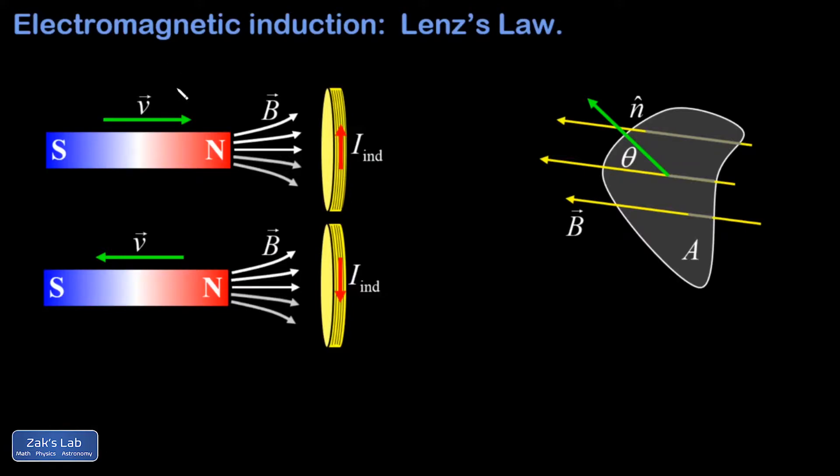We start with a simple experiment with a bar magnet and a coil of wire on the left. In the top picture, we're approaching a coil of wire with the north pole of a magnet, and what we observe in the coil, assuming that its terminals are connected so current is allowed to flow, what we observe is a current flowing in the shown direction.